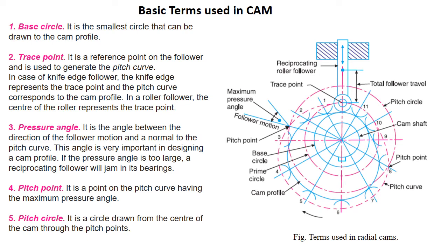Now let us look at the basic terms used to specify a cam. The figure shows the basic shape of a cam, where this line is the cam profile. This is the center of the cam, this is the center of rotation of the roller, this is the follower, and this circle is the cam shaft. The cam is attached to the cam shaft by means of a key, and the roller follower rolls on the surface of the cam when it rotates.